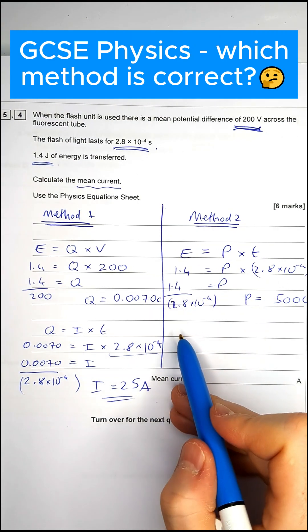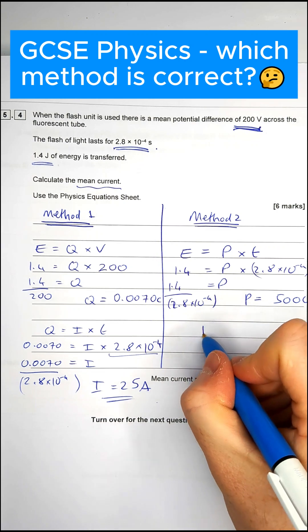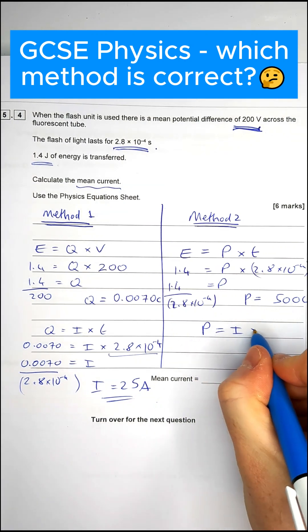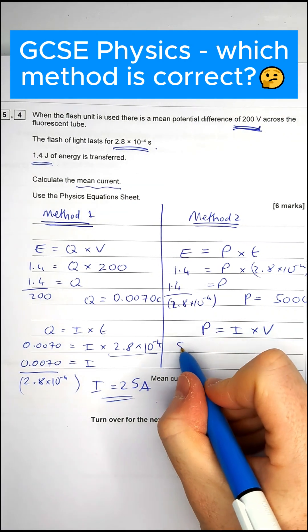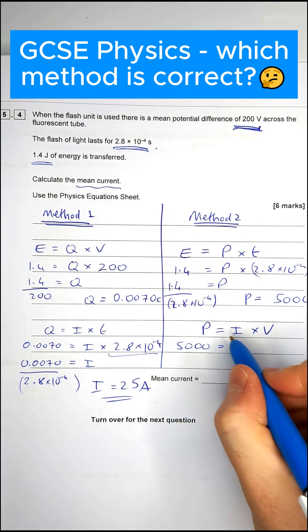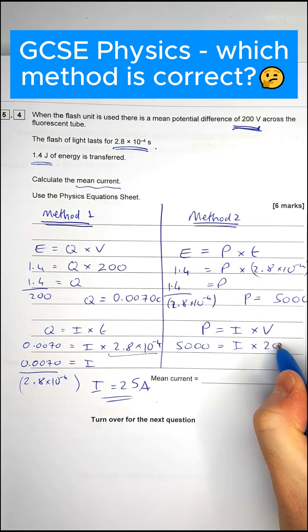So next, to find the current, we've then got to figure out an equation that's got power and current in it. So power equals current times by PD. Power, we've just worked out. Current, we are trying to find. The potential difference is 200.